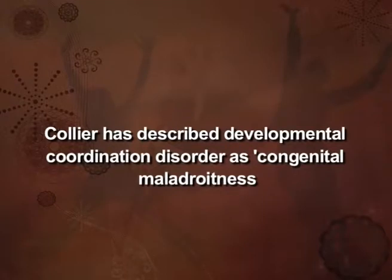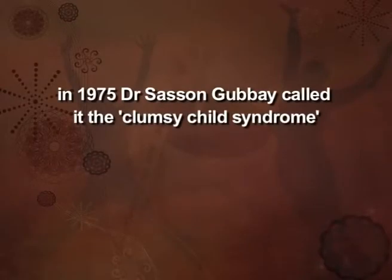Collier described developmental coordination disorder as 'congenital maladroitness,' and A. John Eyre referred to DCD as a disorder of sensory integration in 1972. In 1975, Dr. Cezanne Gebbe called it the 'clumsy child syndrome.'